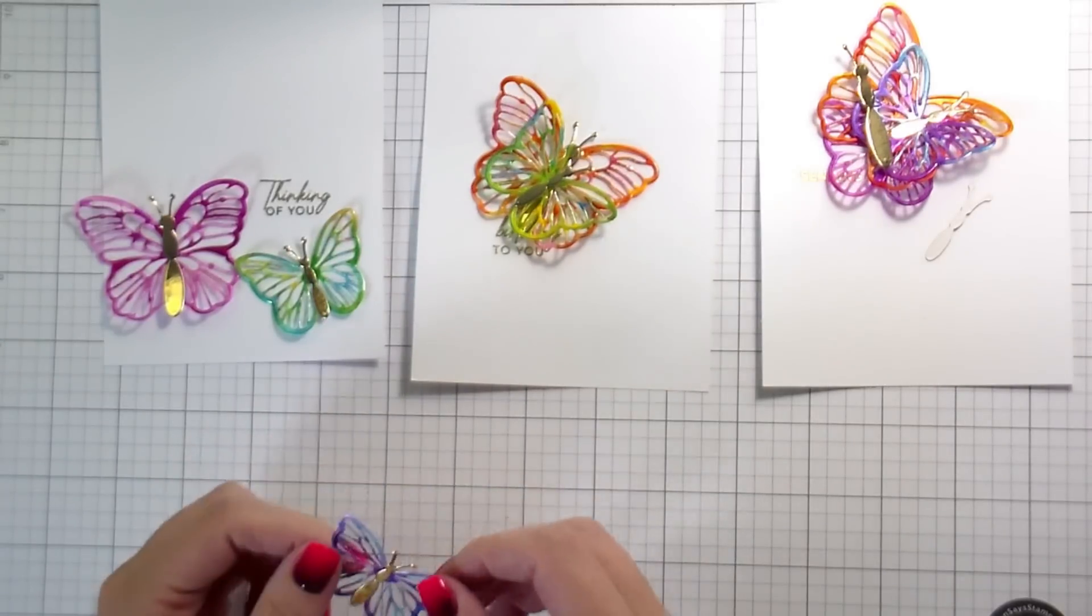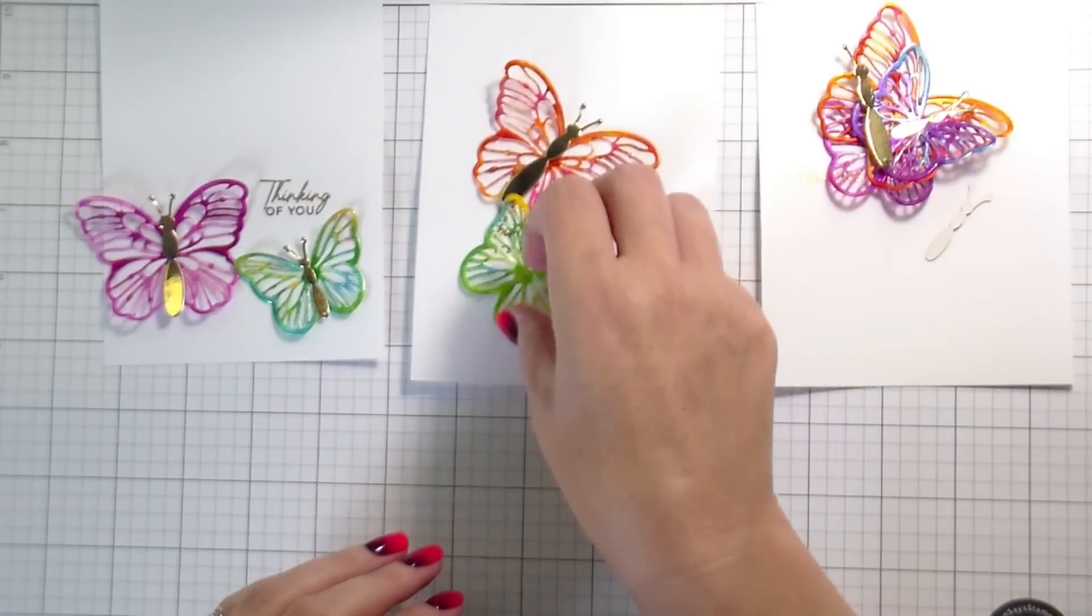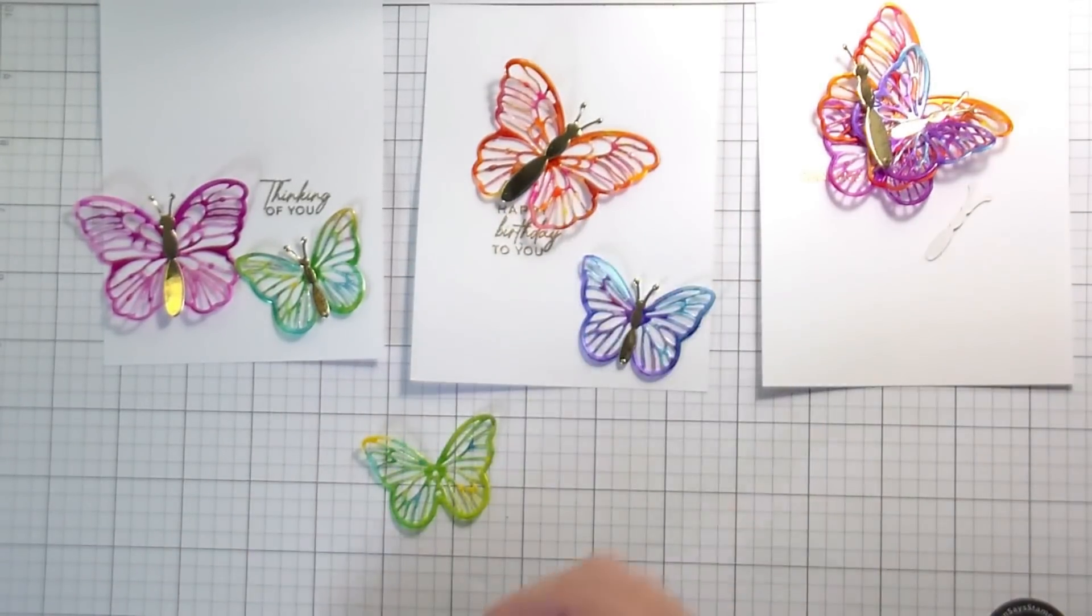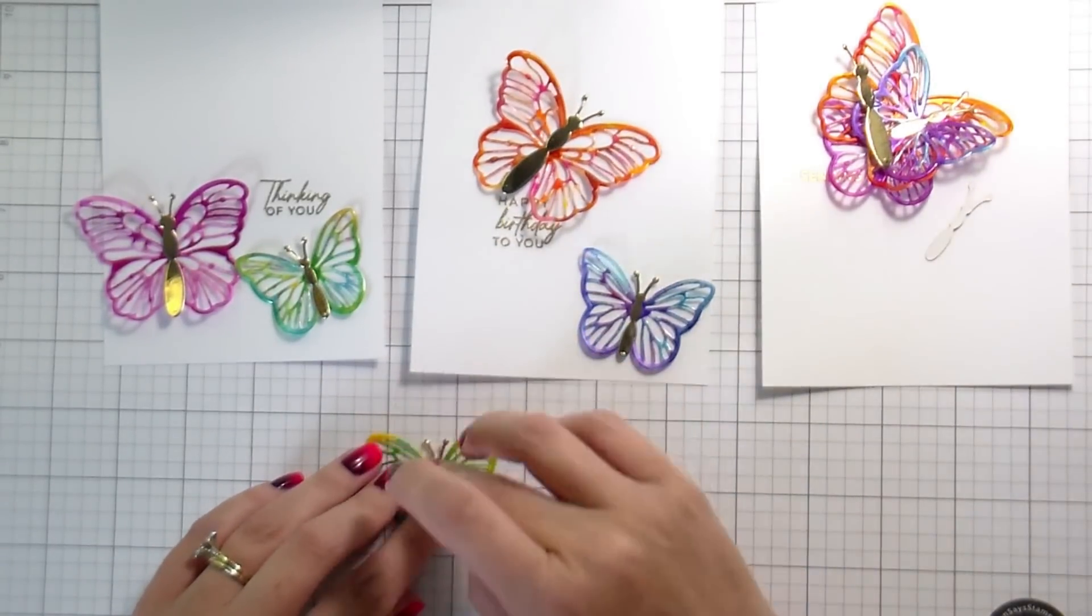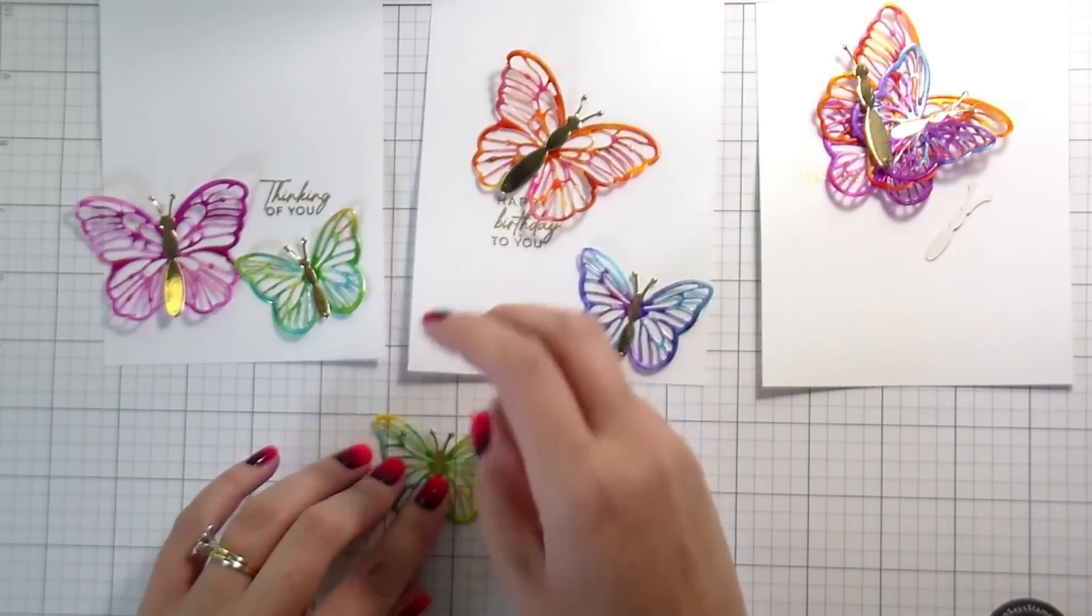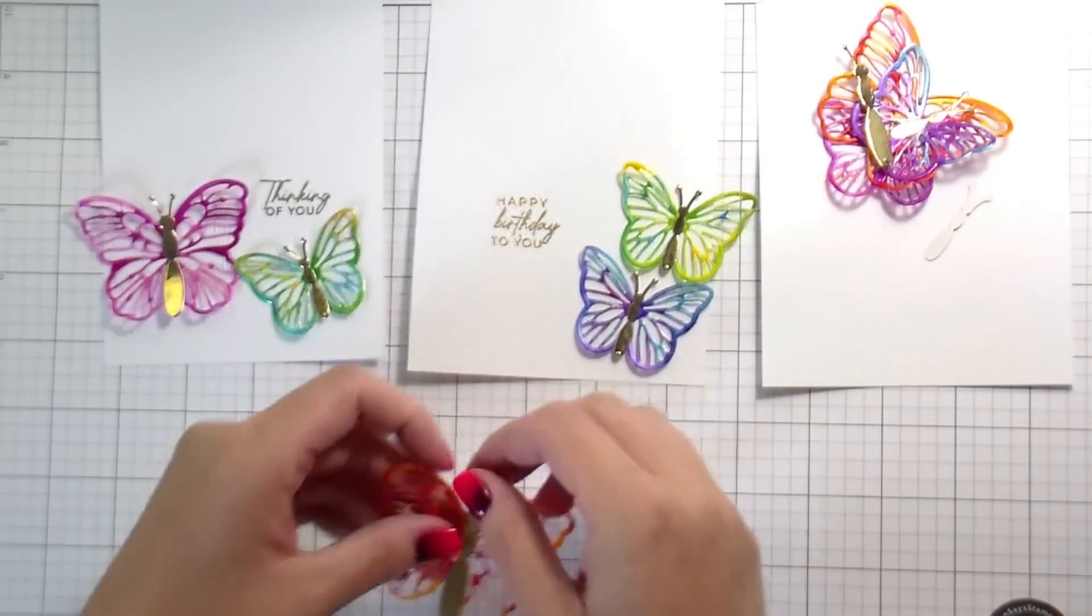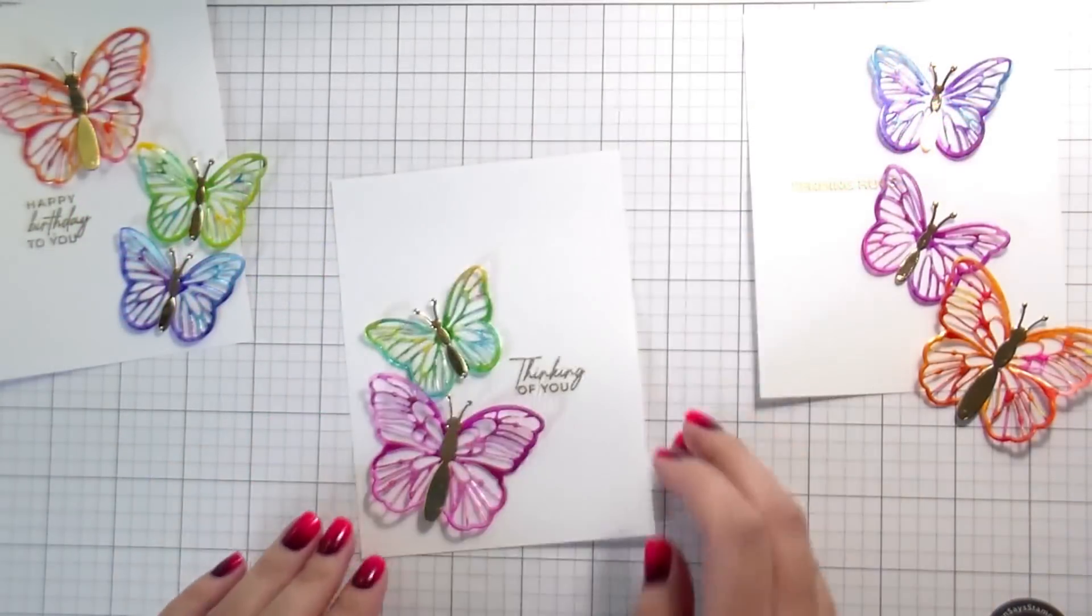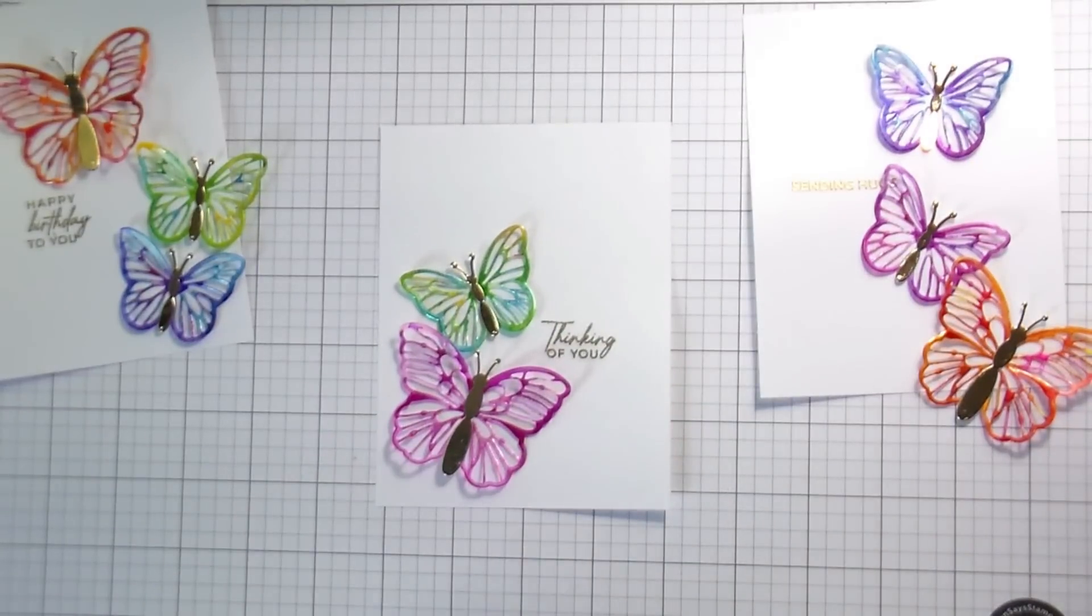If you are using the second method where you're just adding the alcohol ink to the die cuts, if your fingers are super sticky, it will, I'm not saying it will for sure, but there is a risk that you will pull up some of the alcohol ink color because it doesn't absorb into the acetate, it sits on top.